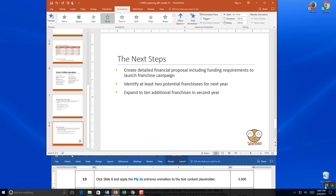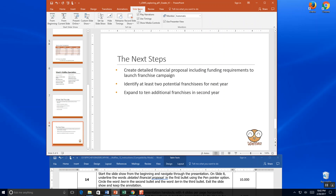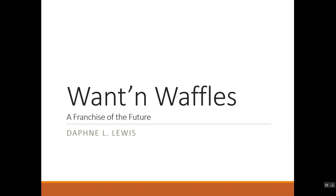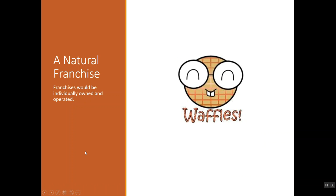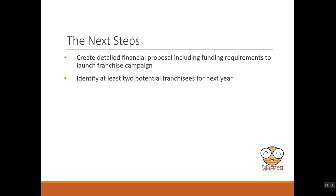Start the slideshow from the beginning. Navigate through the presentation to slide 8 and underline the words 'detailed financial proposal' in the first bullet using the pen pointer option. We come up to Slideshow, go from beginning, and watch it take over the whole screen. We navigate down to slide 8, which is the very last one.